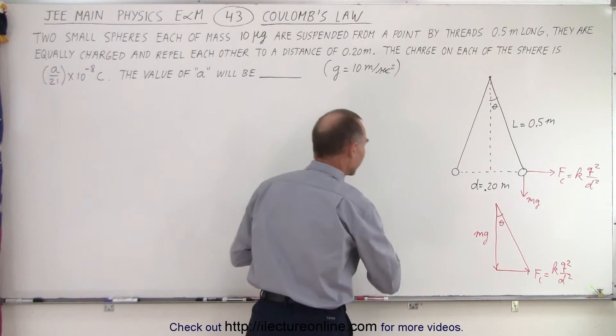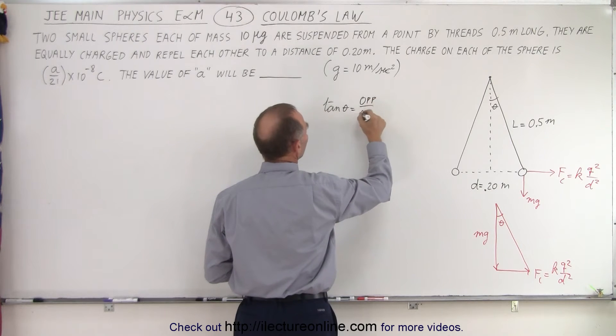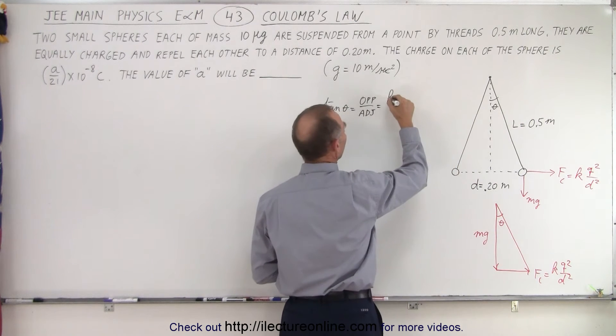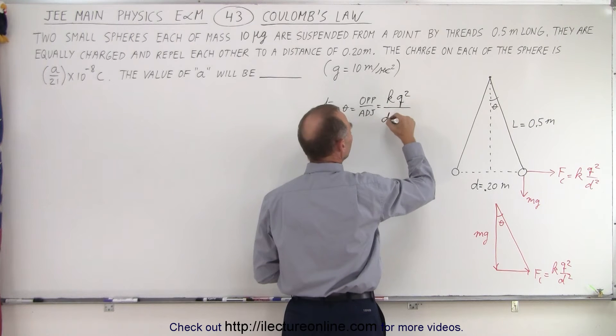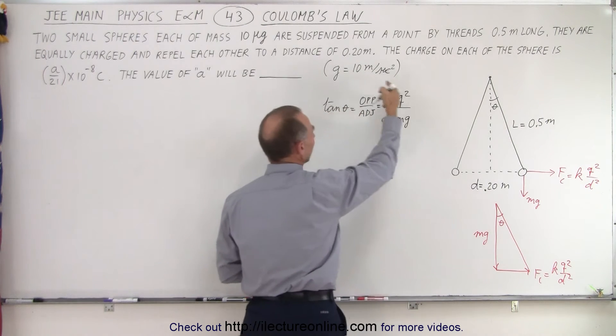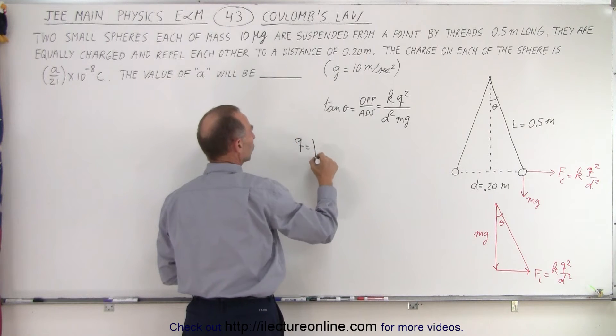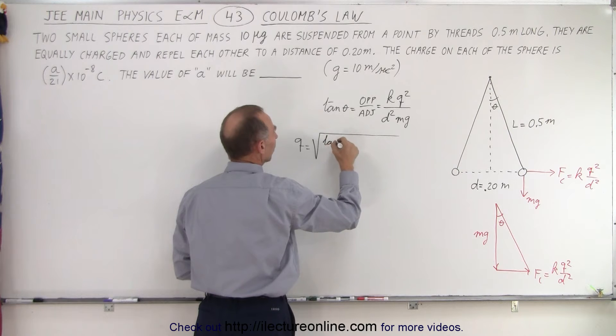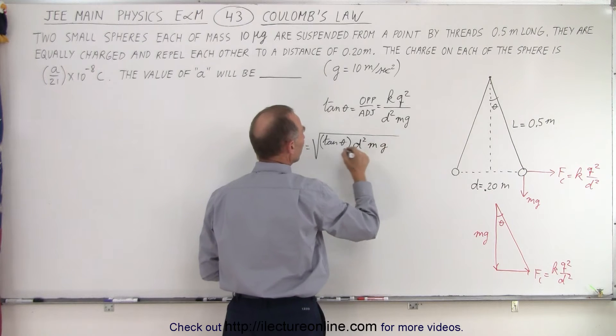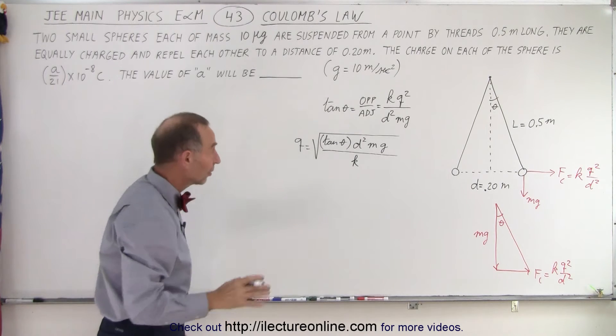And using that principle, we can say that the tangent of theta is equal to the ratio of the opposite side over the adjacent side, and that's going to be equal to the magnitude of this force, which is K Q squared over D squared. And in the denominator, we get the adjacent side, which is Mg. And this equation can be solved for Q. So Q will be equal to the square root of the tangent of theta, multiplied times D squared Mg, all divided by K.